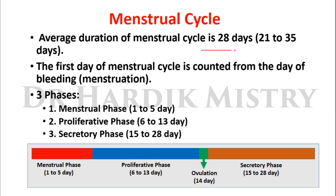The average duration of the menstrual cycle is 28 days, but it may vary from 21 to 35 days. The first day of the menstrual cycle is counted from the day bleeding starts. There are three phases of the menstrual cycle: number one, the menstrual phase, approximately day 1 to 5.